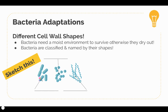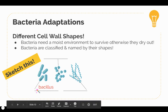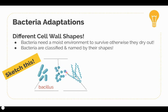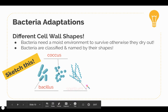The first type of bacteria looks kind of like Tic Tacs — round and rod-shaped. These are called bacillus. The second type are circular, looking like little spheres. These are called coccus.